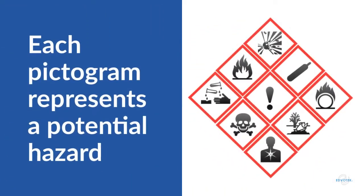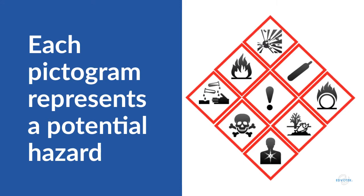For chemicals, each pictogram represents a potential hazard. For example, flames mean a chemical is flammable, and the skull and crossbones mean something is toxic. Both SDSs and product labels use pictograms to quickly communicate a product's potential hazards — no words needed.